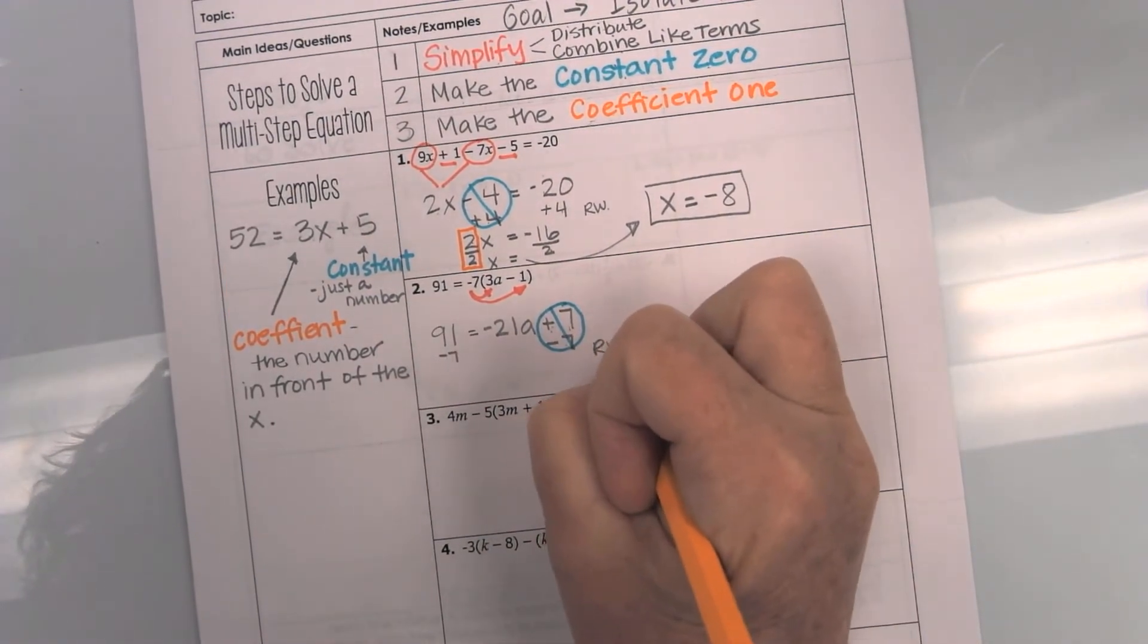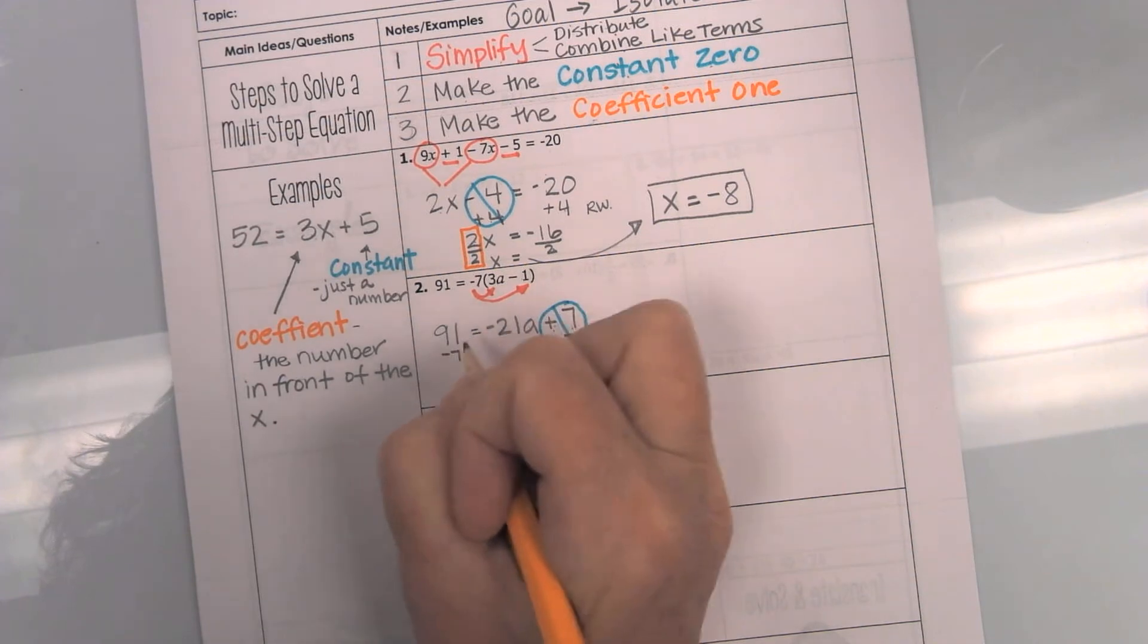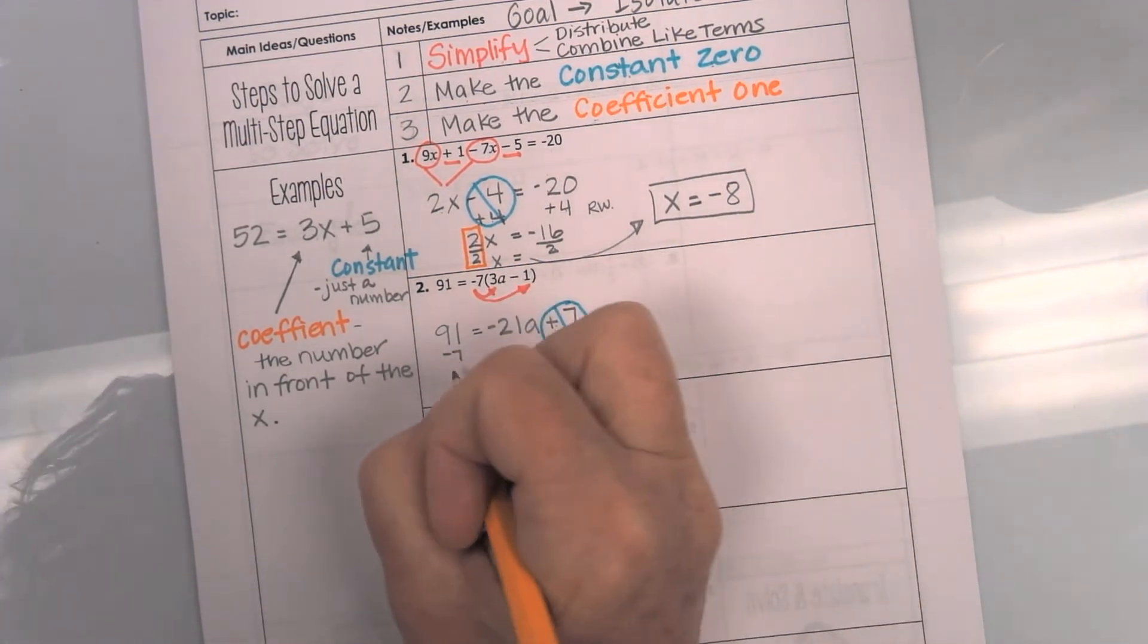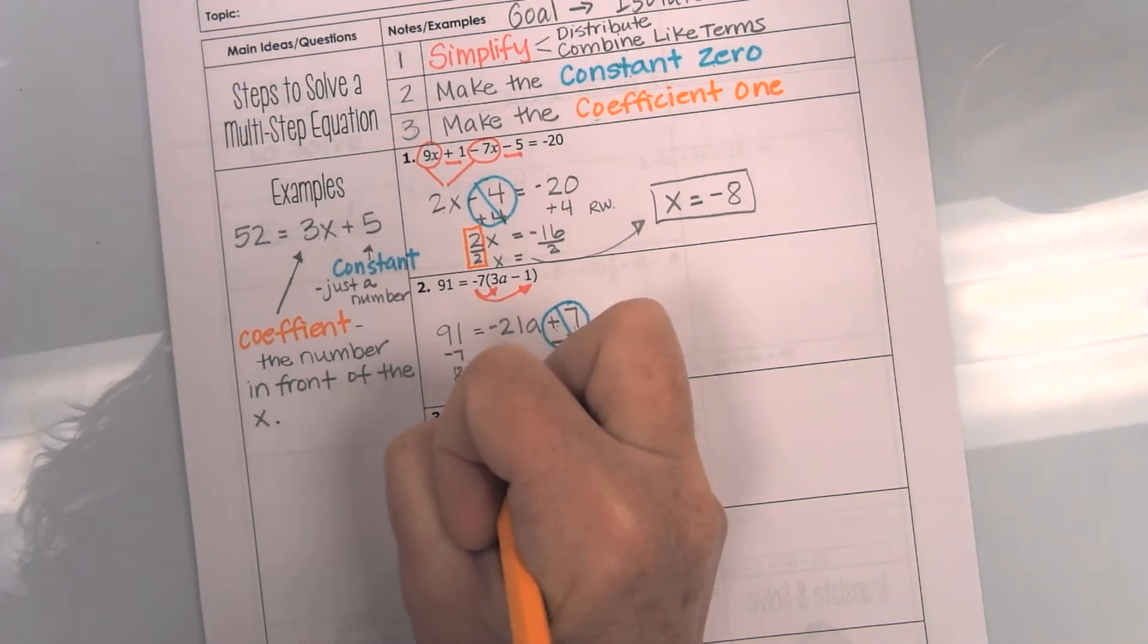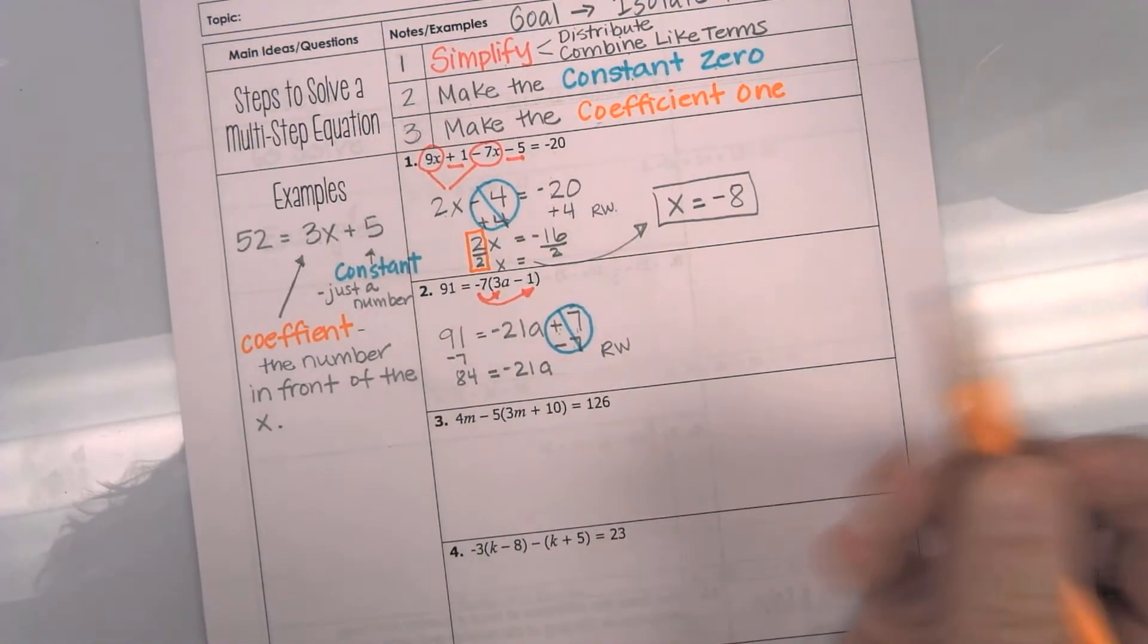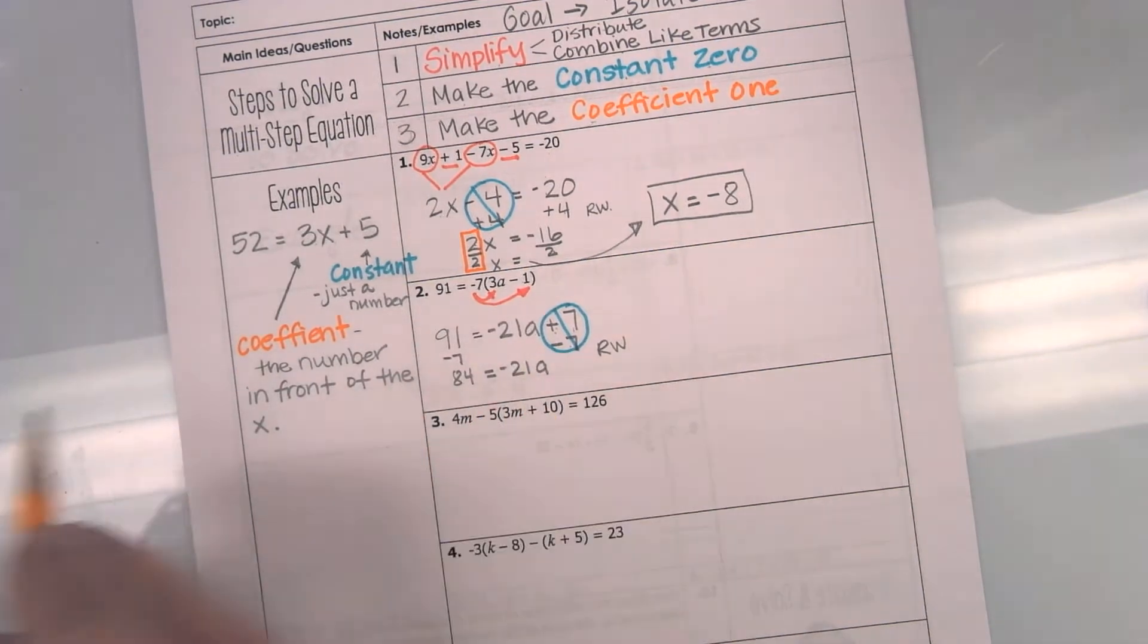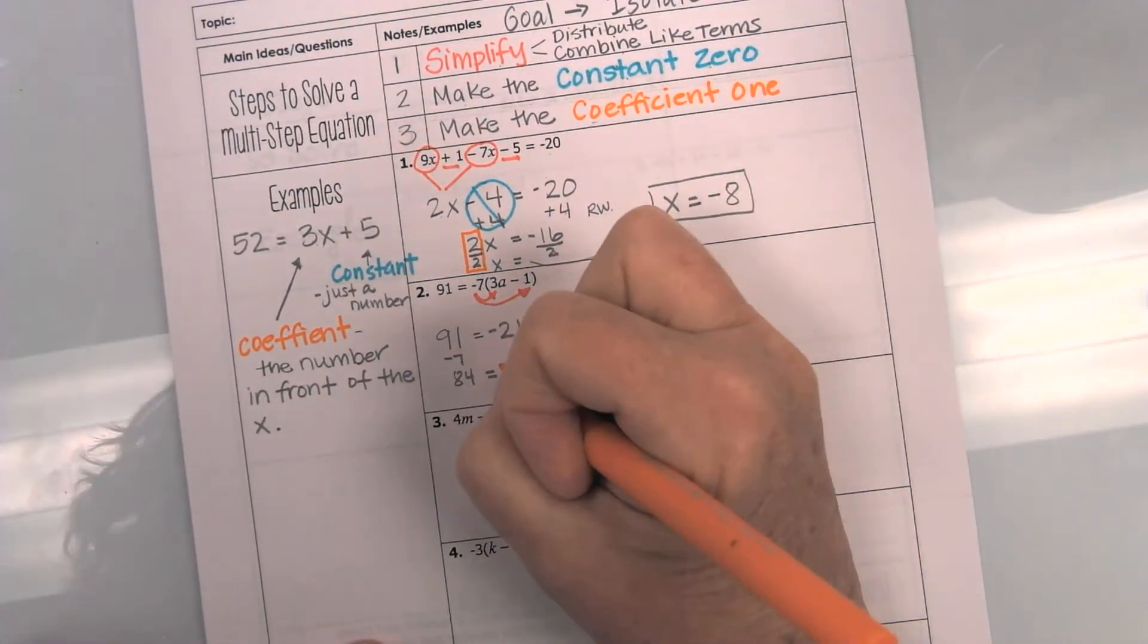Now, remember, I always say rewrite. So, now I have 91 minus 7. So, that would give me an 84. Equals a negative 21a. Okay, so now I have to make this coefficient a 1.